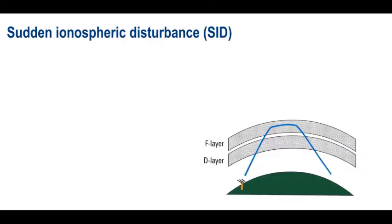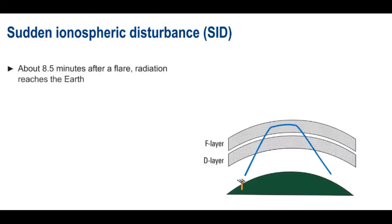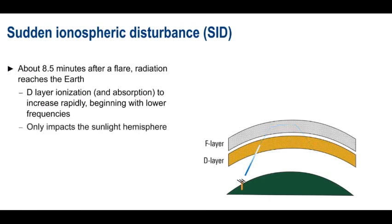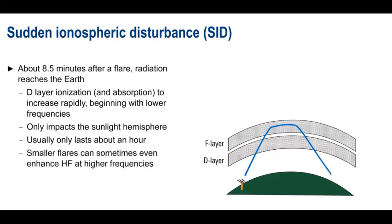As the name implies, a sudden ionospheric disturbance is sudden. It occurs about eight and a half minutes after a flare, that is, at the same time the flare becomes visibly detectable on the Earth, and is caused by the arrival of solar radiation. This radiation causes D-layer ionization, and hence D-layer absorption, to increase rapidly, starting at the lower frequencies and moving upwards. The affected frequencies are often almost completely blacked out. Fortunately, a sudden ionospheric disturbance only impacts the sunlit hemisphere, and tends to last a relatively short time, typically about an hour or so. And in some cases, smaller solar flares can actually enhance HF propagation by increasing ionization at higher frequencies without a corresponding increase in D-layer absorption.